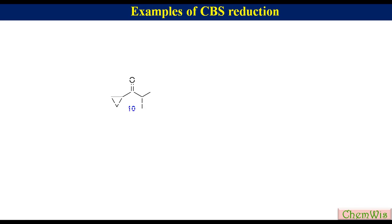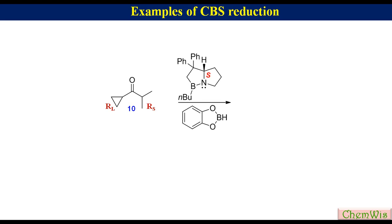In the CBS reduction of cyclopropyl-isopropyl ketone, the pi-electron-rich cyclopropyl group behaves as the large group in comparison to the sterically similar isopropyl group, which behaves as the small group. Thus, reduction of this ketone with catechol borane in the presence of CBS catalyst will allow the addition of hydride ion from the top face of the ketone, giving rise to R-alcohol as the major product.